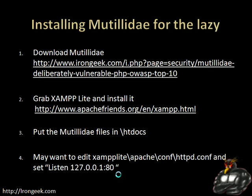I have a video on my website on how to install Mutillidae, but it really is quite simple. Once you have XAMPP extracted, you just extract Mutillidae and put it into the htdocs folder, and there you go. There is one fourth step I highly recommend: go into the XAMPP Lite directory, Apache, conf, httpd.conf, and set it to listen only to localhost. I made Mutillidae incredibly vulnerable — you do not want to be running this on any kind of production network. So I highly recommend you set that.